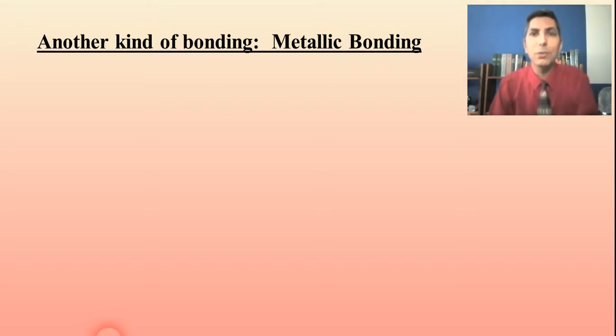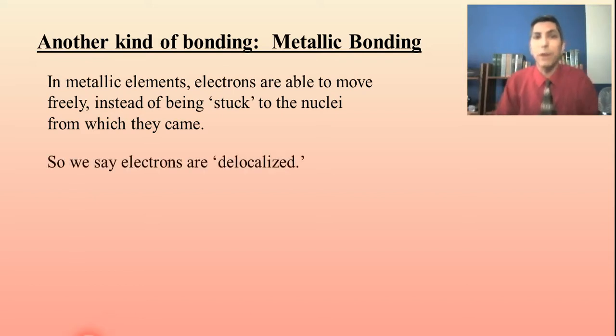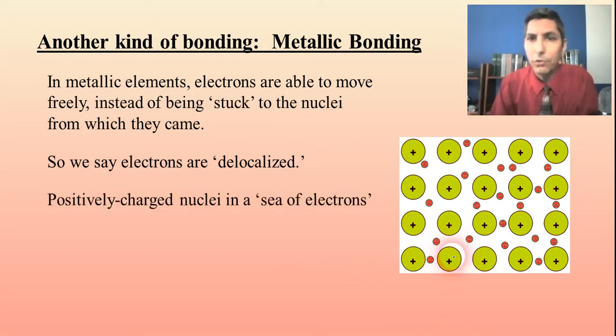The first special case has to do with metallic bonding, not ionic or covalent, but what happens in a metal. If you have a metallic element or a metallic alloy like a chunk of copper or gold, the electrons are moving around differently. The electrons are able to move around freely instead of being stuck to the nucleus from which it came. As a result we say that the electrons in these metals are delocalized. Here's a little diagram so you can see what that would look like. We have these positively charged nuclei and the electrons are able to move around fairly freely. Sometimes we say that the nuclei are sitting there in a sea of electrons.